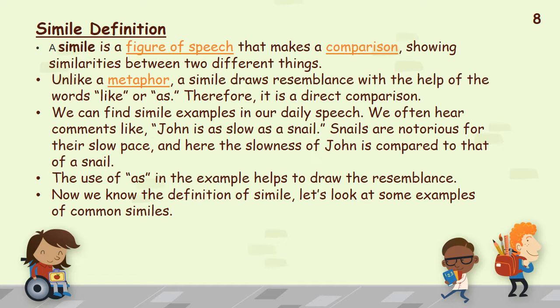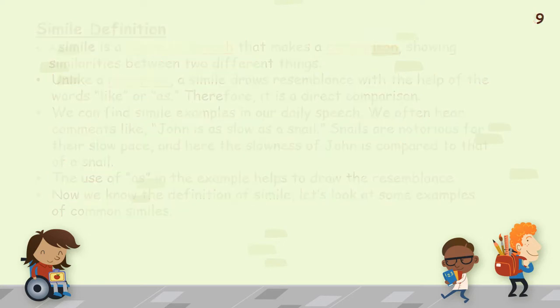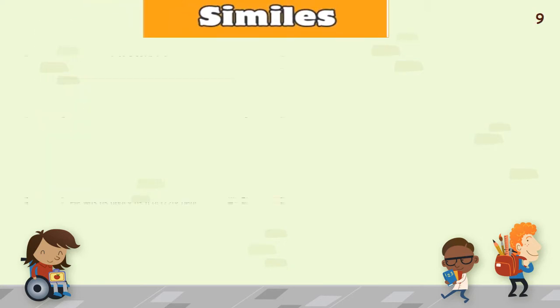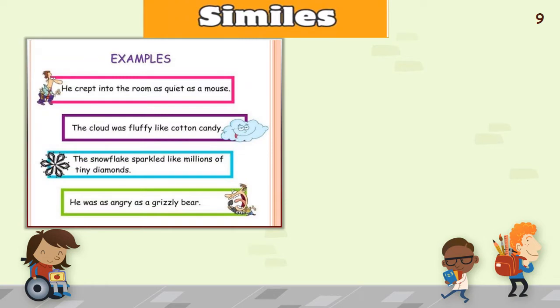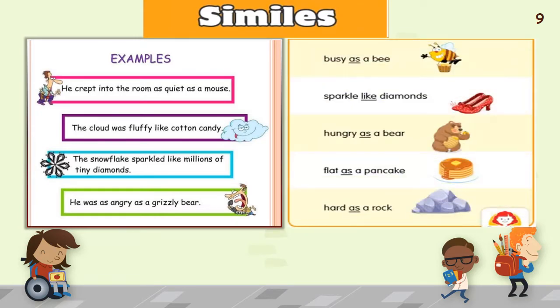Now we know the definition of simile — let's look at some common examples. He crept into the room as quiet as a mouse. The cloud was fluffy like cotton candy. The snowflake sparkled like millions of tiny diamonds. He was as angry as a grizzly bear. Busy as a bee. Sparkle like diamonds. Hungry as a bear. Flat as a pancake. Hard as a rock. You can see how the words 'like' and 'as' are used throughout.